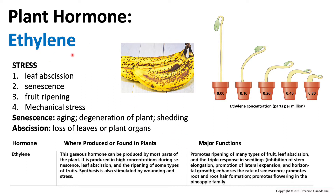Once ethylene is produced in an aging plant, the cells within that plant will undergo apoptosis. The organelles within the cells, the DNA — they will all begin to degenerate and break down, and that plant will essentially age and then die.